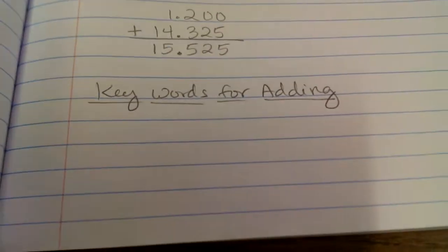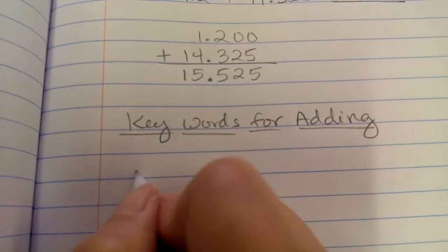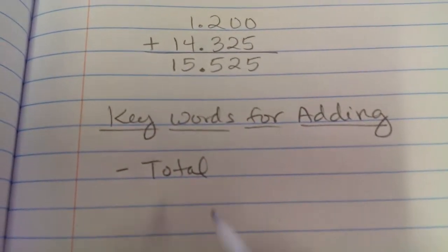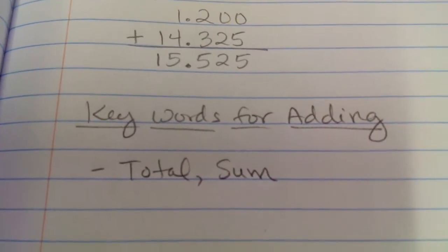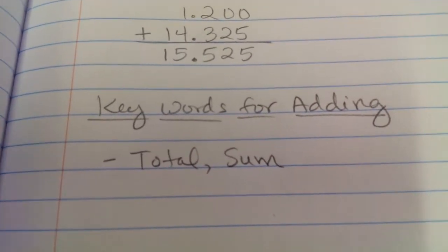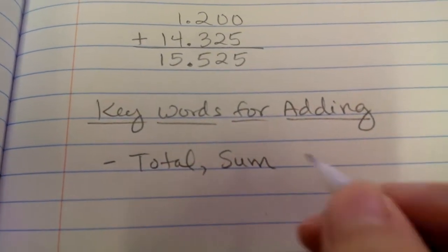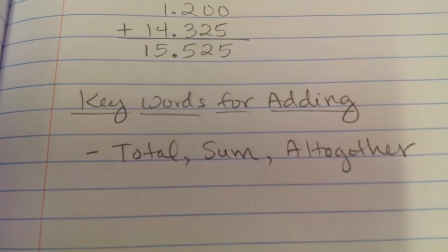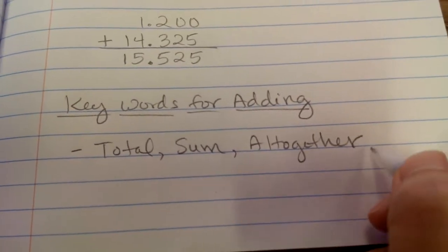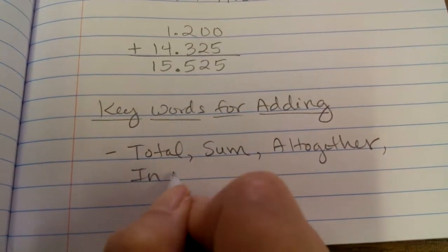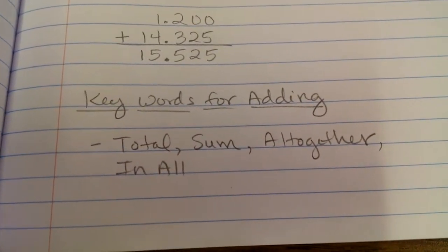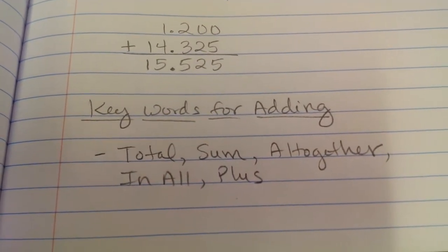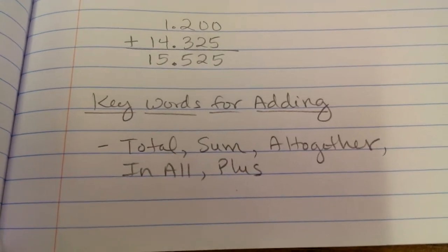Keywords for adding. So how do you know when you read a word problem that you're going to add? Well, if it says total, you're going to add. If it says sum, find the sum. Sum means the answer to an addition problem, so you're going to add. If it says all together, so you combine everything together, all together, that's adding. If it says in all, that's also adding. And, of course, if it says plus, that also means to add.